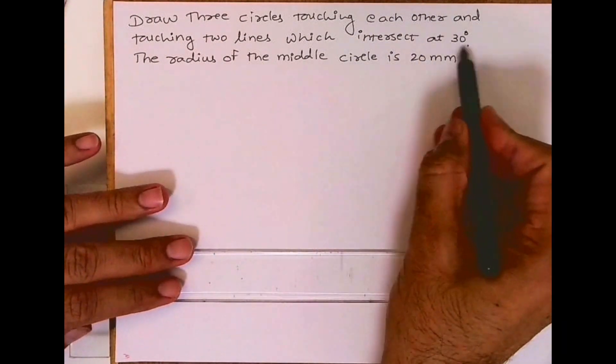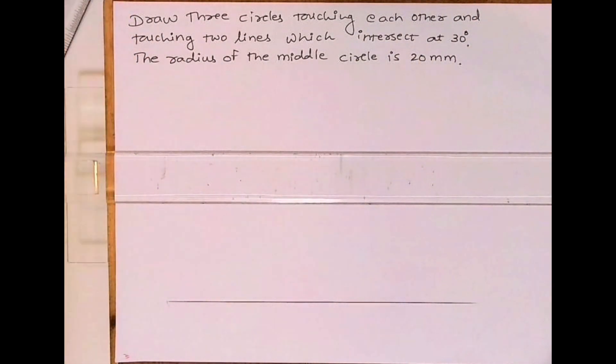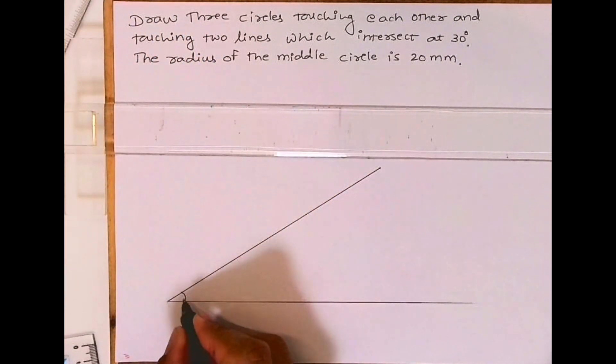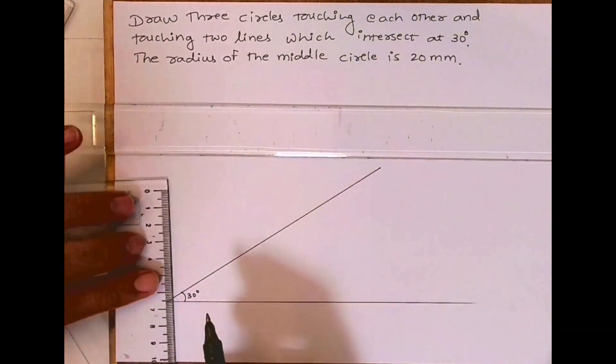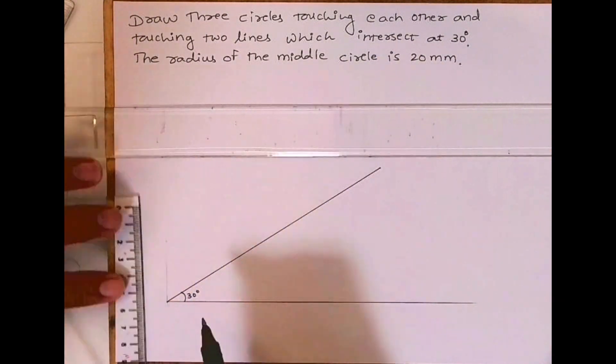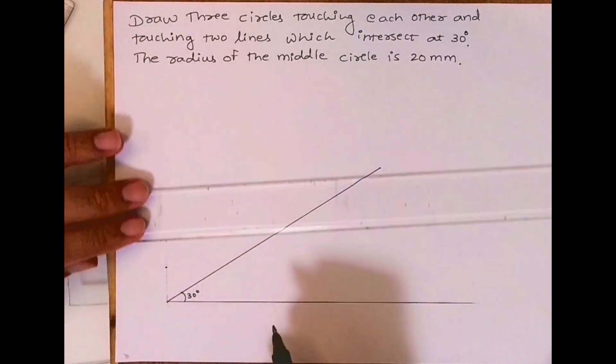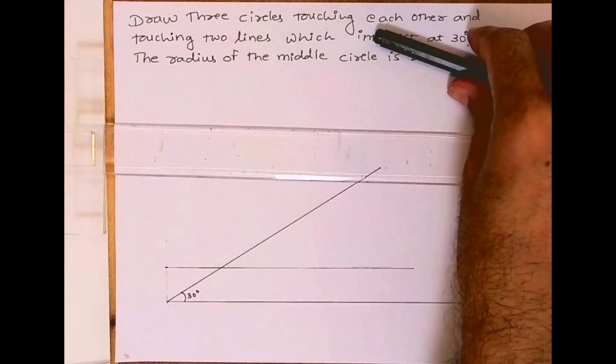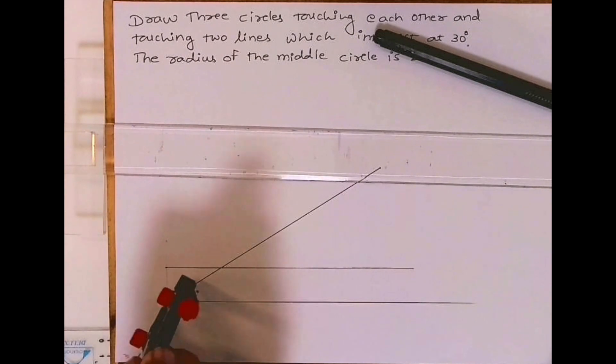...the 30-degree inclination. After drawing 30 degrees, we'll take radius 20. We'll take height 20 vertically and draw a horizontal line. Then I will bisect the 30-degree angle.